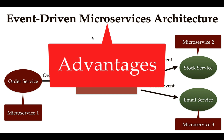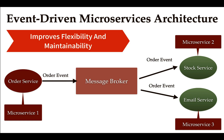The first advantage of event-driven architecture is that it improves flexibility and maintainability. In this architecture, the order service is only responsible for collecting the order and creating the order event, the stock service is only responsible for updating the stock in the database, and the email service is only responsible for sending the email to the customer. All three microservices have their own purpose and are independent of each other — there is a clear separation of concerns.